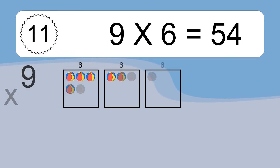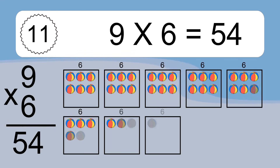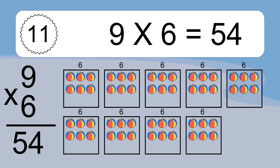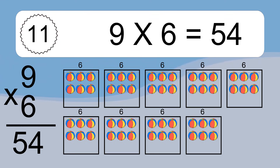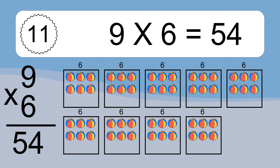9 times 6 equals what? 9 times 6 equals 54. We have 9 boxes, and each box has 6 colorful balls inside. If you count all the balls in all the boxes together, you will have 9 times 6 balls. This equals 54 balls.